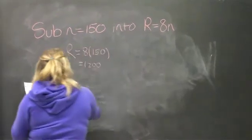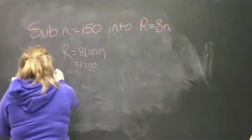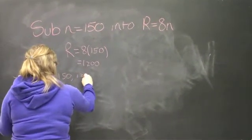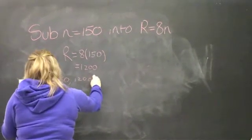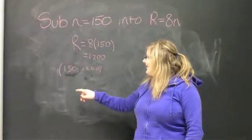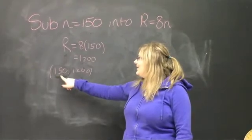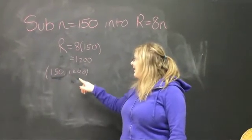So, the point of intersect of the two original equations is 150, 1200. This means that the break-even point is at 150, 1200, which means we need to sell 150 T-shirts in order to break even.